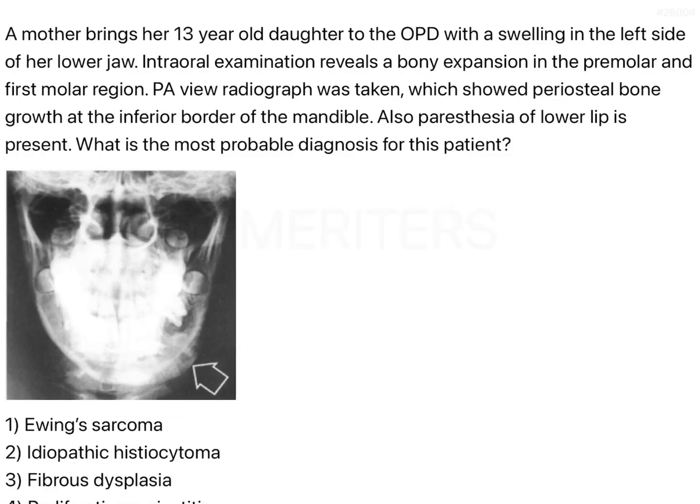The question is: a mother brings a 13-year-old daughter to the OPD with a swelling on the left side of her lower jaw. Intraoral examination reveals a bony expansion in the premolar and first molar region. A periapical radiograph was taken which showed periosteal bone growth at the inferior border of the mandible. Also, paresthesia of the lower lip is present.